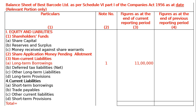The balance sheet has four columns: particulars, note number, figures at the end of the current reporting period, and figures at the end of the previous reporting period. Part 1 is equity and liabilities. First: shareholders funds — A is share capital, B is reserves and surplus, C is money received against share warrants. Number 2 is share application money pending allotment, and 3 is non-current liabilities, under which A is long-term borrowings — note 1 is Rs. 11 lakh.